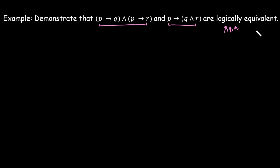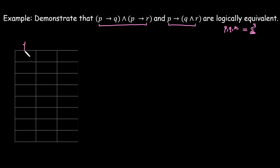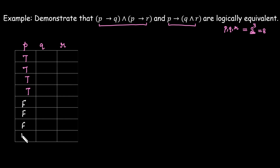We set up columns for P, Q, and R. For the 8 cases: P gets four true values followed by four false values. For Q, we divide by two — so two true, two false, two true, two false. For R, we further divide by two — alternating one true, one false throughout all eight rows.